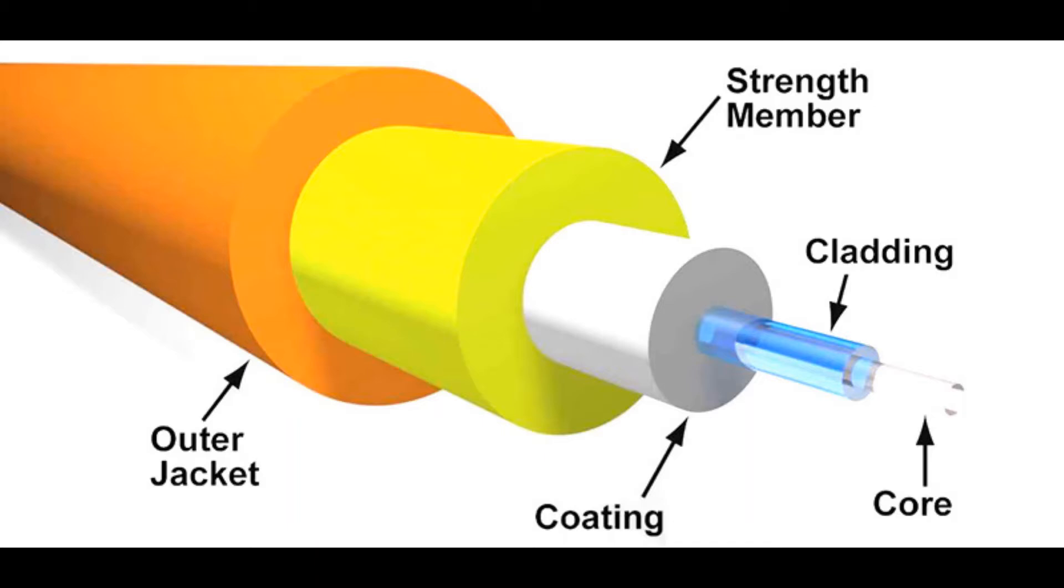If you look closely, you can see five different layers. Going from the inside out, the core is the center layer where the light is actually transmitted. The next layer out is the cladding, which reflects the light back into the core to make sure none of the signal is lost.